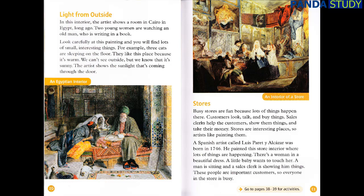In this interior, the artist shows a room in Cairo, in Egypt, long ago. Two young women are watching an old man who is writing in a book. Look carefully at this painting and you will find lots of small, interesting things. For example, three cats are sleeping on the floor — they like this place because it's warm. We can't see outside, but we know that it's sunny. The artist shows the sunlight that's coming through the door.